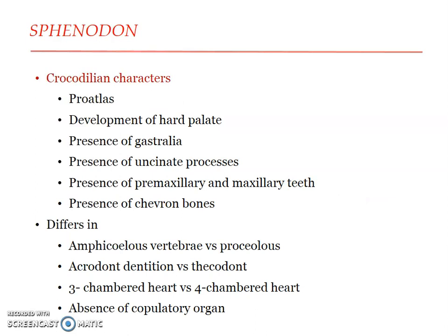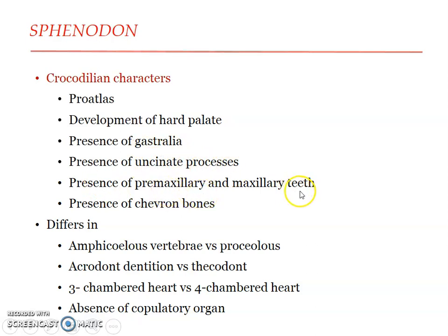Regarding crocodilian characters found in Sphenodon: the presence of a pro-atlas anterior to the atlas, which articulates with the occipital region of the skull; development of a hard palate; presence of gastralia in the abdominal region; uncinate processes; presence of premaxillary and maxillary tooth rows; and presence of chevron bones — all these are crocodilian characters.